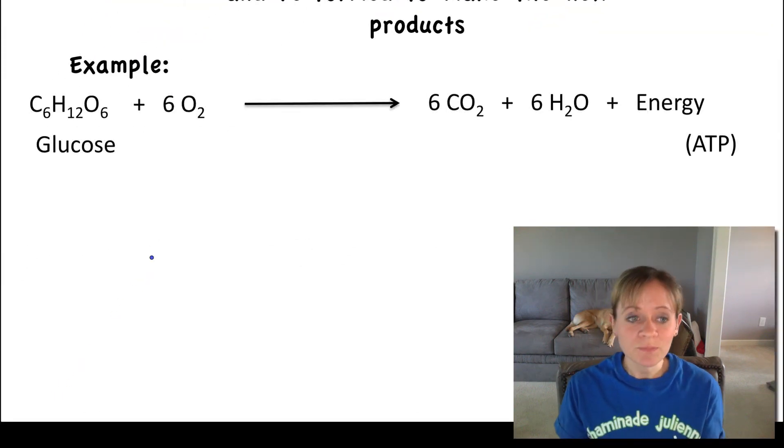And here's an example. This is actually the example of how your body makes ATP. You take in glucose or sugars, you also need to breathe in oxygen, and we're going to talk a lot more about this in the next couple of units. And the chemical reaction takes place, and instead of having the atoms bonded and arranged this way, we now break those bonds and rearrange them to make carbon dioxide, water, and ATP. So that's what a chemical reaction is.